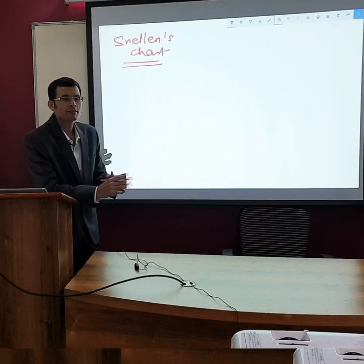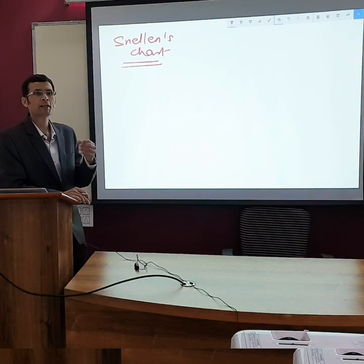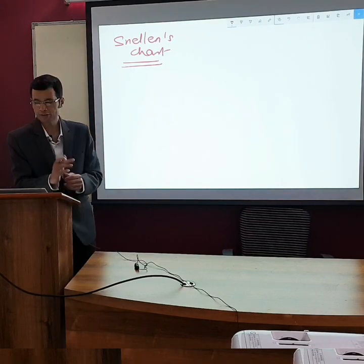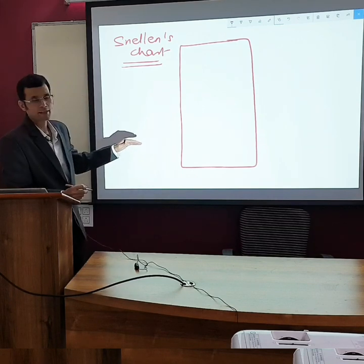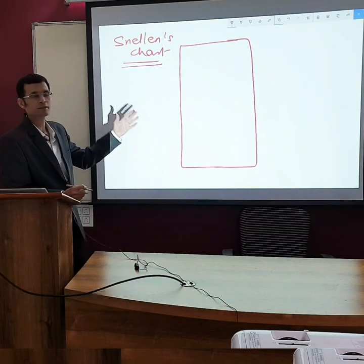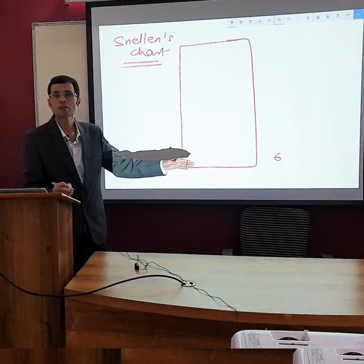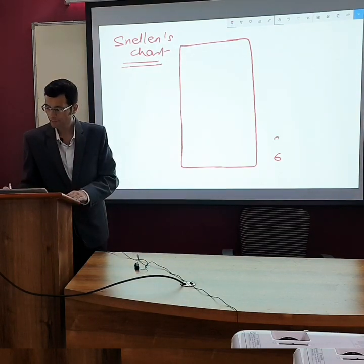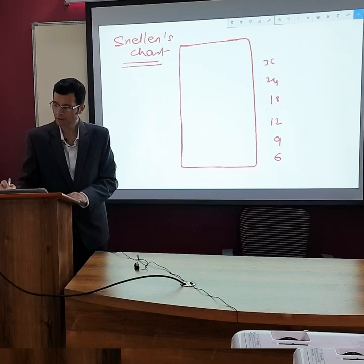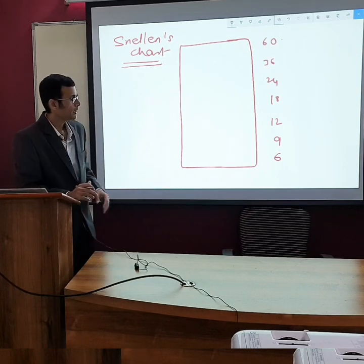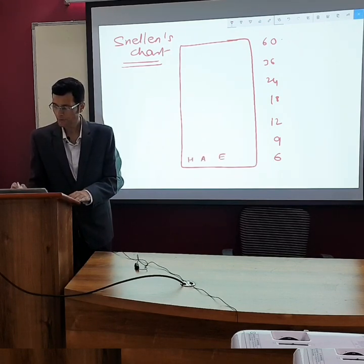Now let's understand the Snellen's chart. First of all, Snellen's chart is placed at 6 meters distance. The chart has certain letters written in different sizes, and alongside those letters you see distances written: 6, 9, 12, 18, 24, 36, and 60. There are certain letters written in different sizes like this.